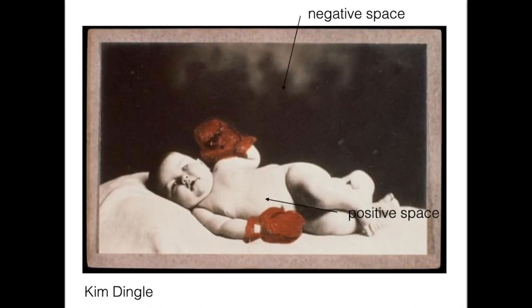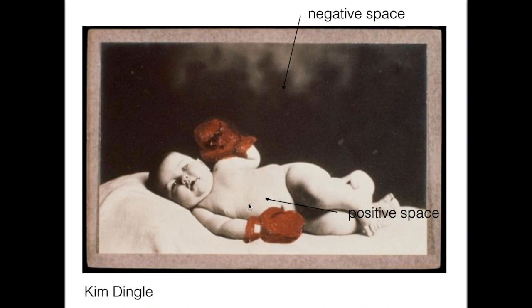Let's talk about positive and negative space in terms of this piece by Kim Dingle. The obvious negative space is the background, and the positive space is the baby. I also want to talk about the balance of this composition — it's fairly well balanced, with the positive space taking up about the bottom half of the drawing. If we think about the amount of black area versus the white and red area, it's fairly even, not exactly, but generally well balanced.